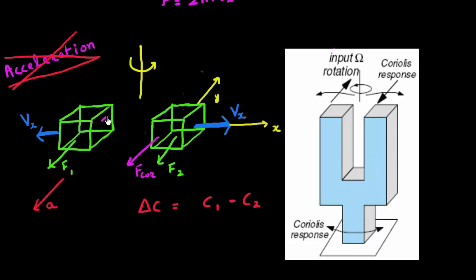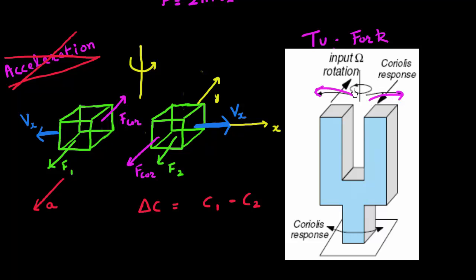Many times these structures are described as tuning fork-based gyroscopes, which utilize essentially a tuning fork. The two arms of the tuning fork move in opposite directions. So when the fork is subjected to a rotation, the two parts experience Coriolis forces that are equal in magnitude but opposite in direction.